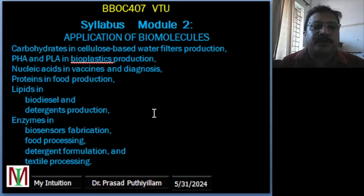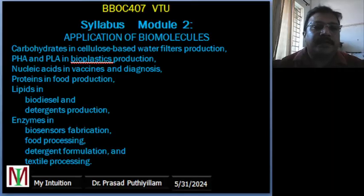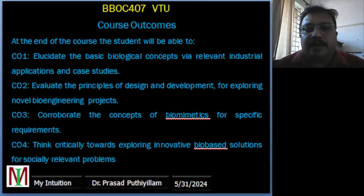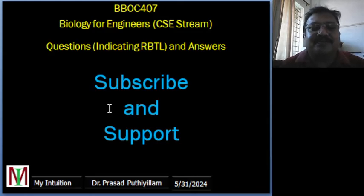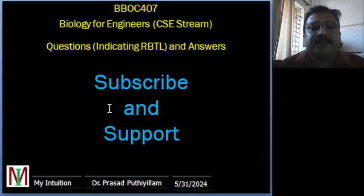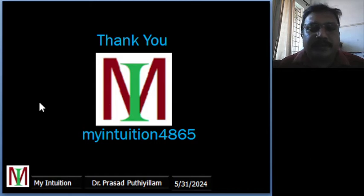This is the syllabus of module 2, Application of Biomolecules. Carbohydrates in cellulose-based water filters were already covered in the module 2 part 1 class video. This particular class is for PHA and PLA in bioplastic production; remaining classes will follow continuously, so keep tuned to my YouTube channel. The course outcome is also mentioned here. Please subscribe, like, share, and click the bell button so you get notified when I publish new videos. The class notes — the PPT converted to PDF — will be available in the description box with a download link. This is my YouTube channel, My Intuition 4865.